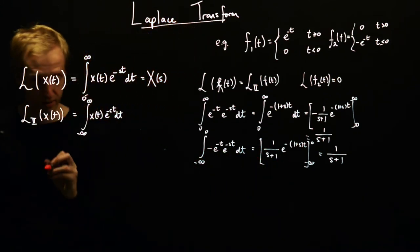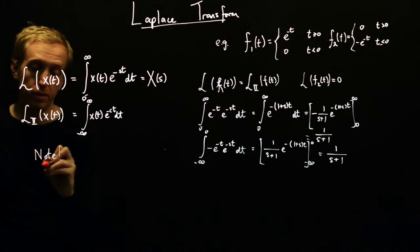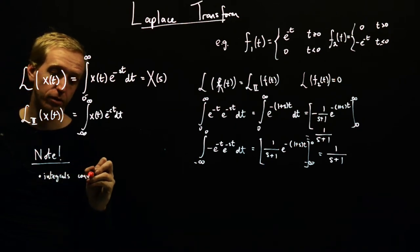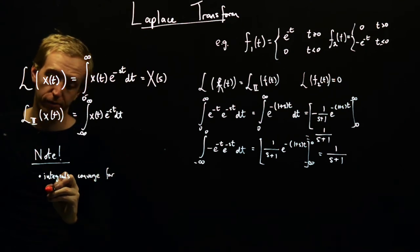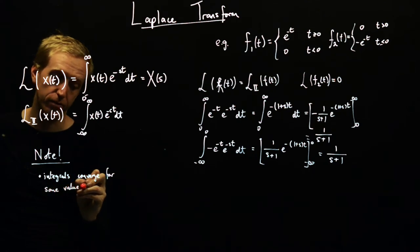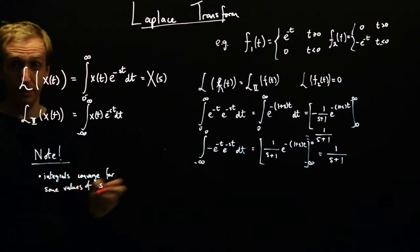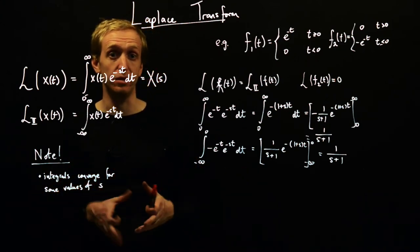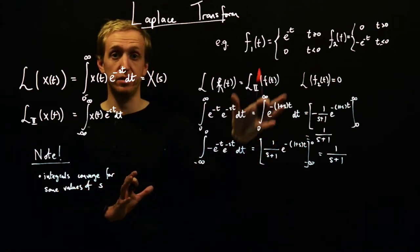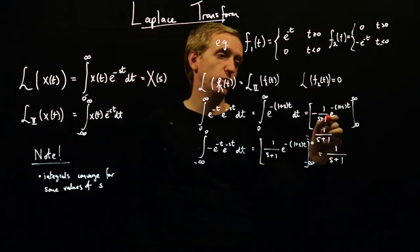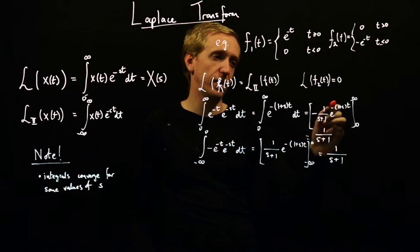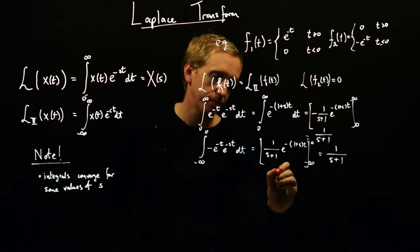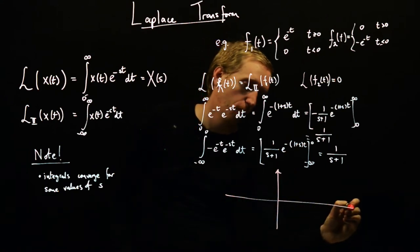We're going to start chopping up the s-plane and trying to identify in which regions these integrals converge and in which regions they don't. This is really the key message: integrals converge for some values of s. The range of values of s for which they converge is called the region of convergence, and the Laplace transform only makes sense and is only defined on the region of convergence. Let's draw a picture of the s-plane — this is the complex plane.